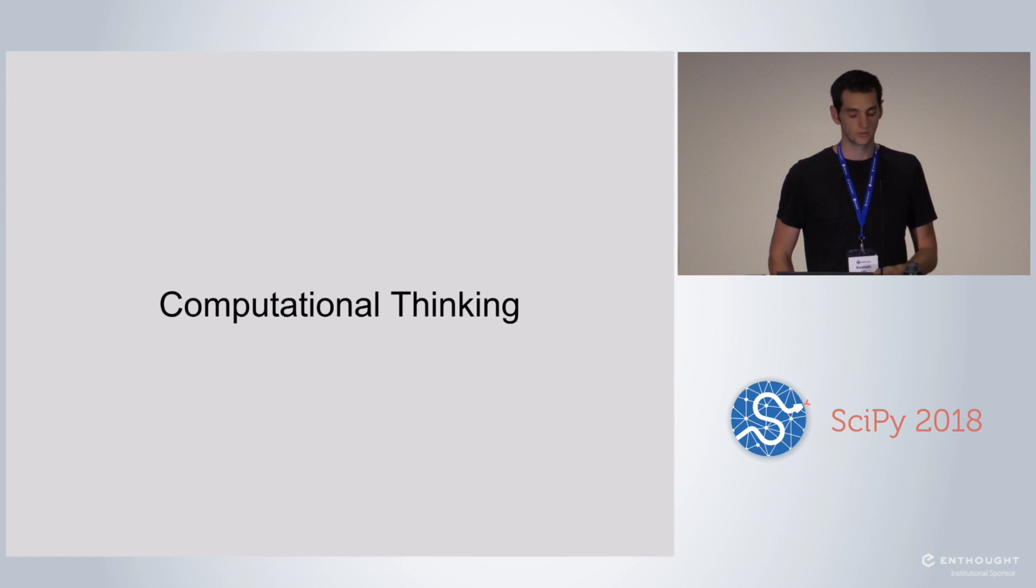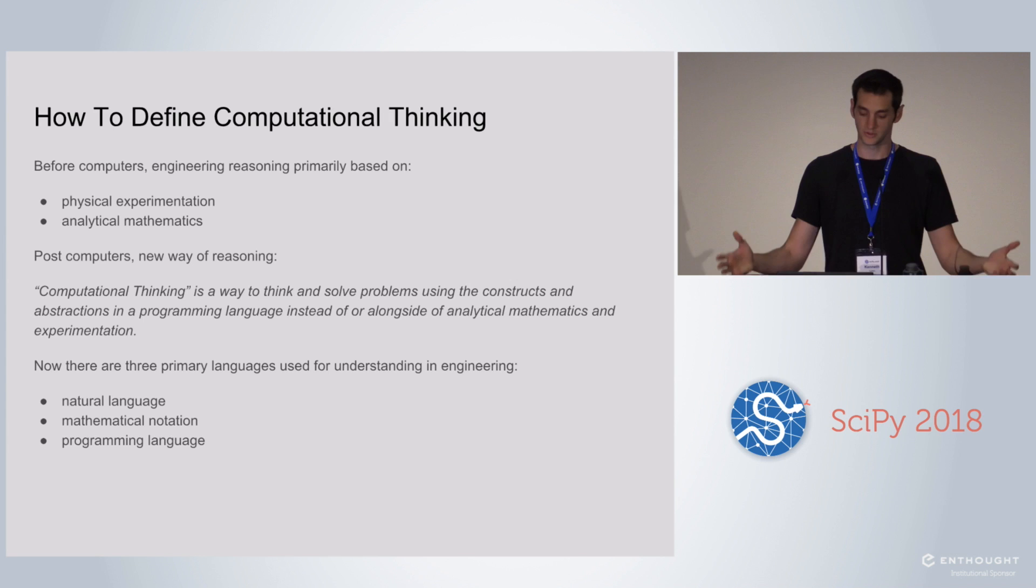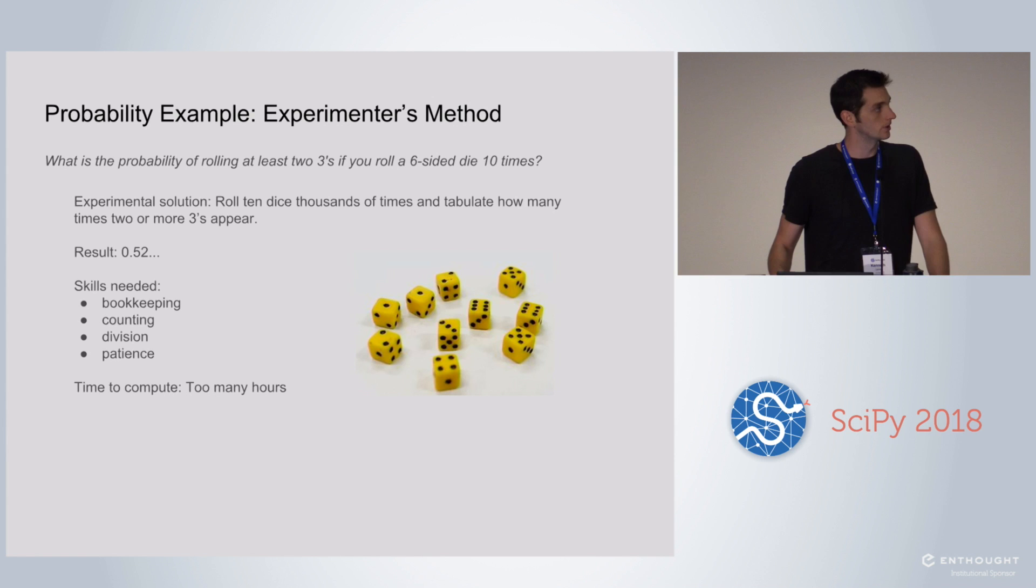We saw computational thinking as one way to approach that. Computational thinking can be thought of as another language on top of what we already do when we do engineering. We can talk about a system using natural language, describe it, describe how it moves and how it behaves. We can also use really concise and nice mathematical language to do a very similar thing. We can also use programming language - we can use code to actually describe how something works or to simulate it or to model it, that kind of thing.